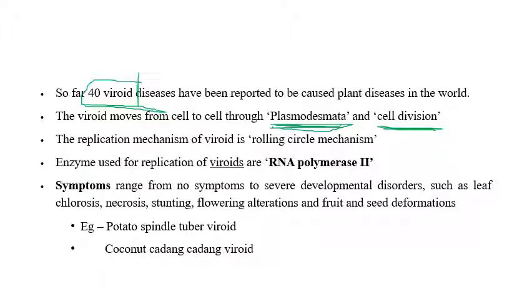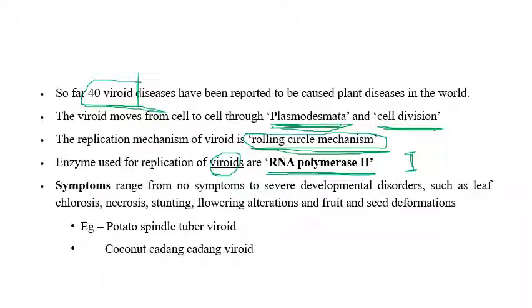The replication mechanism of viroids is the rolling circle mechanism. The enzyme used for viroid replication is RNA polymerase 2, whereas RNA polymerase 1 is the enzyme used for the replication of plant viruses. RNA polymerase 1 is for virus replication; RNA polymerase 2 is for viroid replication.